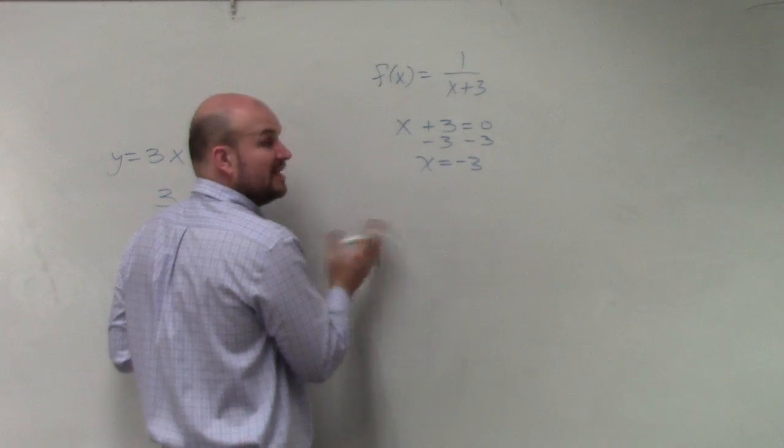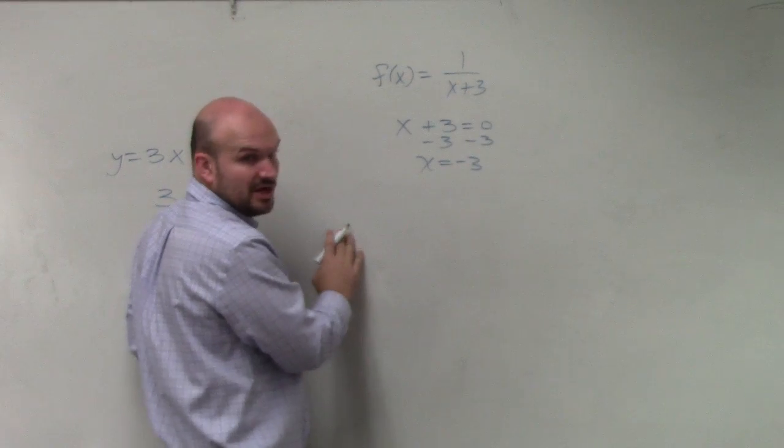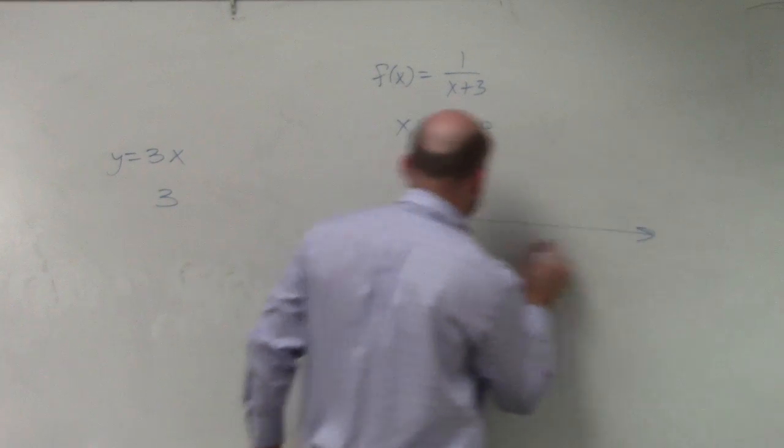So x equals negative 3. And let's double check that. When x equals negative 3, does that make our denominator equal 0? Yes, so that's not in our domain. So again, if you were going to write the domain, take a number line.